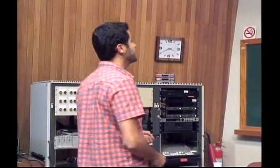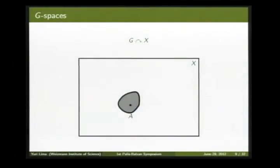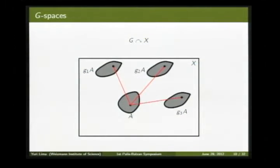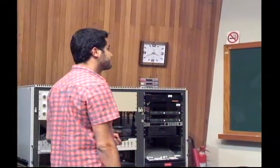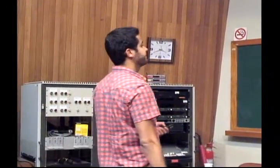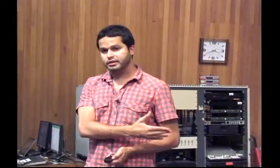This is what we call a G-space, and we are interested in the actions of these groups on compact metric spaces. For every element of the group you can apply the element itself to a subset and get another subset of X.